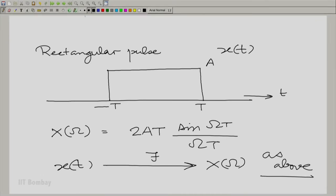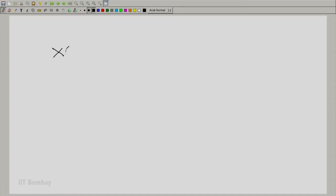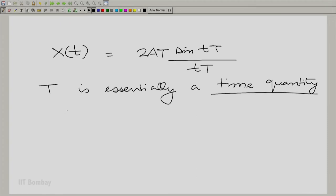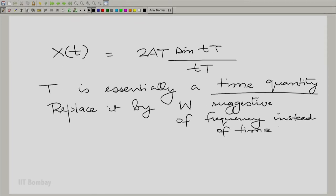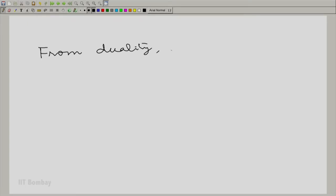Now, let us invoke duality. In doing so, let us write down X(t) would look like 2aT·sin(t·T)/(t·T). The problem is T is essentially a time quantity. Let us replace it by some other symbol which essentially suggests frequency. So we are saying is effectively X(t) is of the form 2aW·sin(tW)/(tW). Let us now find its Fourier transform.